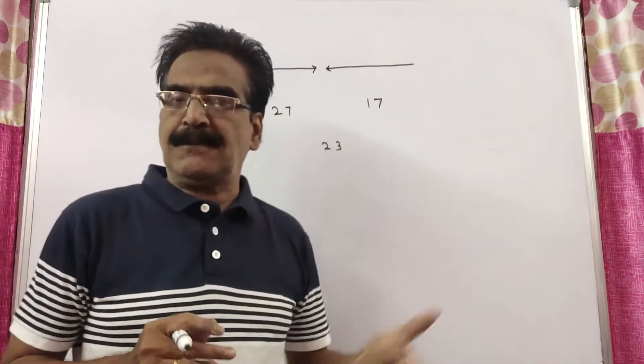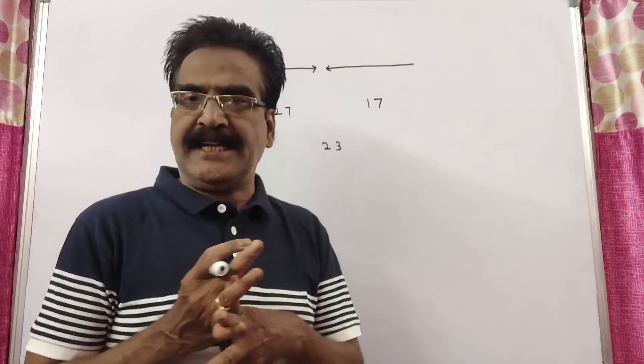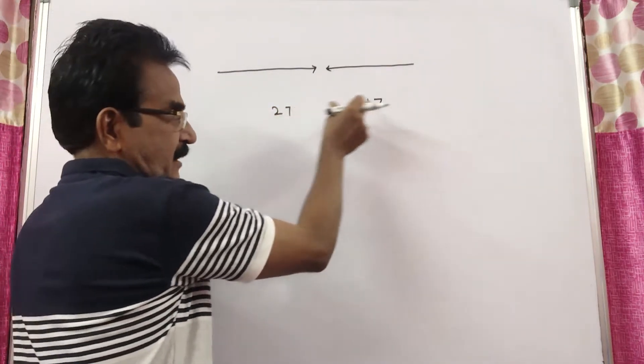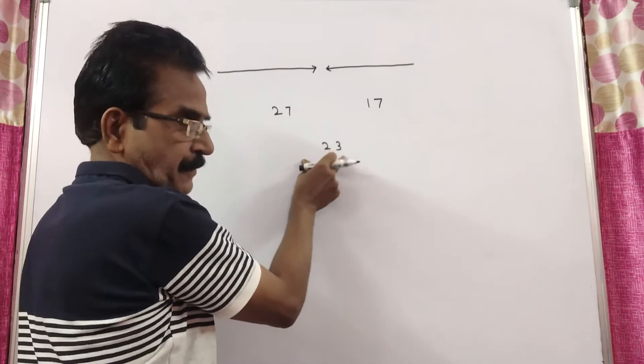Friends, this problem can be solved by applying the rule of allegation. See, this is one, that is dearer, this is cheaper, this is mean.